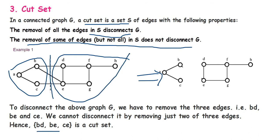To disconnect the above graph G, we have to remove three edges: B–D, B–C, and C–E. We cannot disconnect it by removing just two edges. Hence B–D, B–E, and C–E form a cut set. Disconnecting this set means A–B–C–D will be one set and F–G–H will be another set.